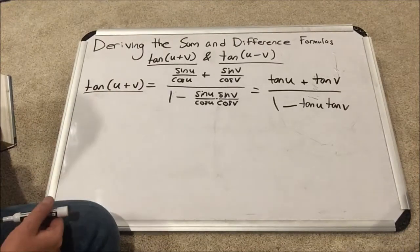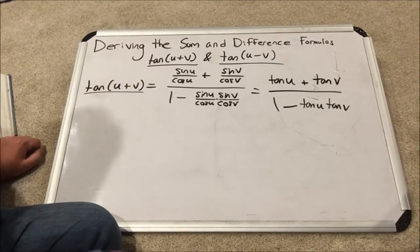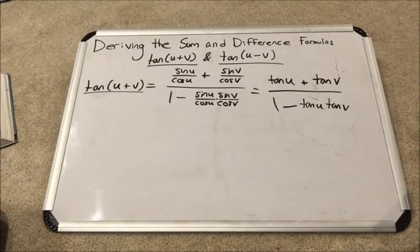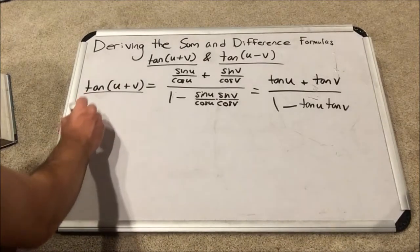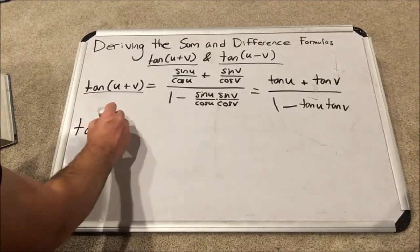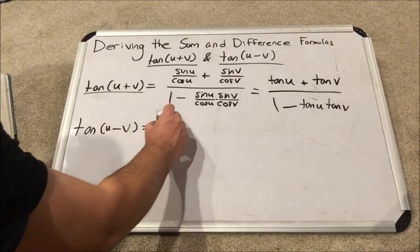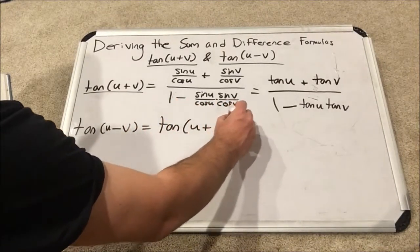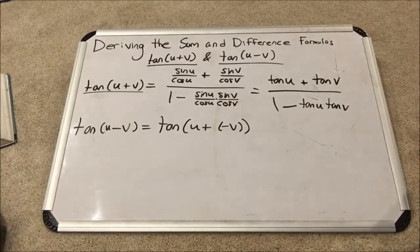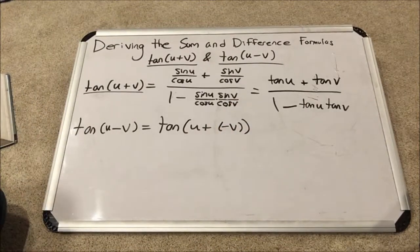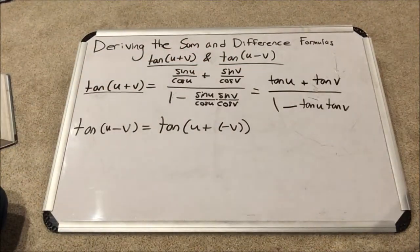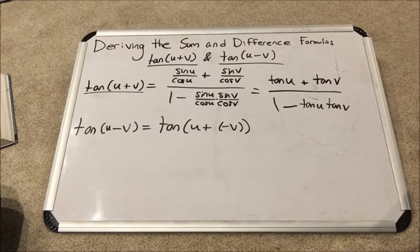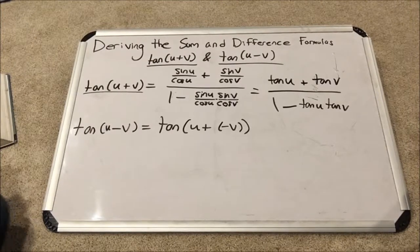Now, the trick that we're going to do to get tangent u minus v is the same trick we did for part two for the sine u minus v formula. We will rewrite tangent u minus v, which is what we want to derive, as tangent u plus negative v. These are equivalent, but now we have the plus, so we can reuse our result from the previous step, the previous formula derivation, but we will plug in a negative v instead of a positive v wherever a v exists.